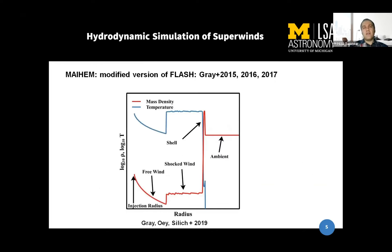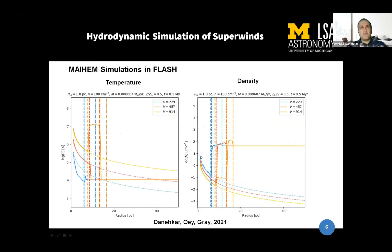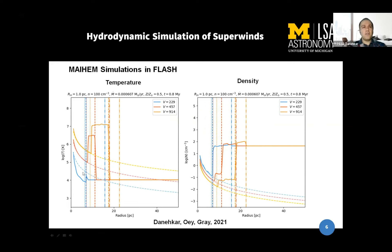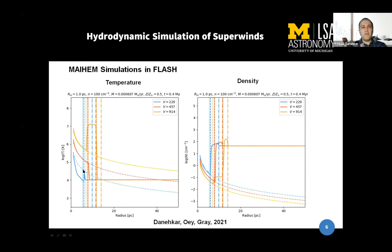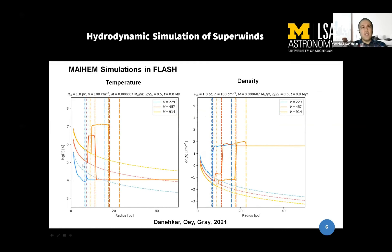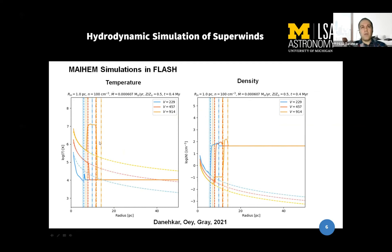Here is the typical density profile and temperature profile of superwind and super bubble. Here we have a bubble produced at a temperature of 10 million Kelvin, and here we have shells. Here is the result of the hydrodynamic simulations. In the low velocity case, you see the separation of superwind and catastrophic coolings, but in high velocity you see the formation of temperature bubbles.